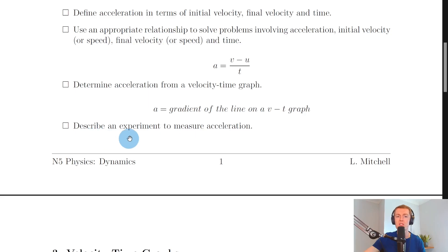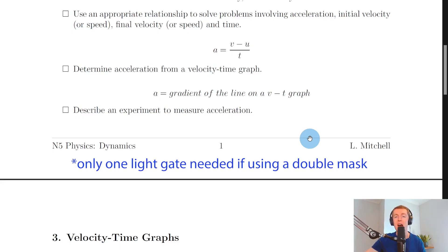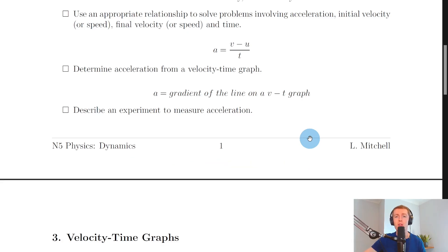Lastly for section two, you need to describe an experiment to measure acceleration. This is similar to measuring average speed: two light gates connected to a timer and a ramp. The trolley has a double mask on top — two pieces of card separated by a gap. You measure the width of each card, input it to the timer, and let the trolley move down the ramp. The timer gives you an initial speed, final speed and time so you can plug them into a = (v − u) / t.